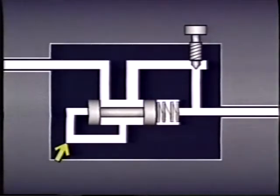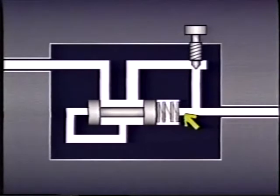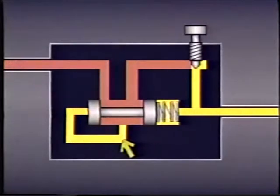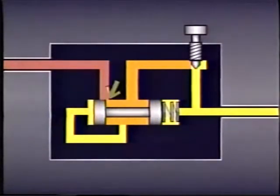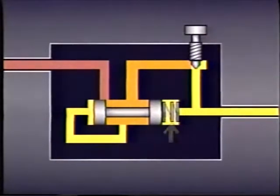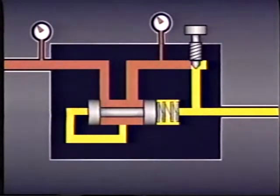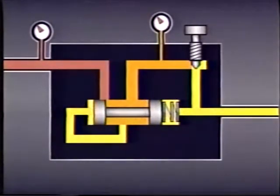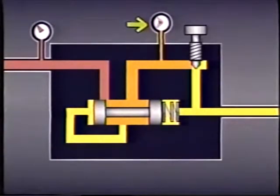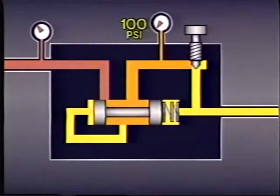One pilot passage compensates for fluctuations in upstream pressure, and the other compensates for fluctuations in downstream pressure. The pilot passage that compensates for upstream fluctuations directs fluid pressure to one end of the compensator spool. As the spool moves, it blocks off part of the flow until pilot pressure equals the tension pressure of the spring. For instance, suppose the valve has a 100 PSI spring and inlet pressure is 500 PSI. In operation, pilot pressure will push the spool over until pressure downstream of the restriction created by the spool is reduced to 100 PSI, the tension pressure of the spring.